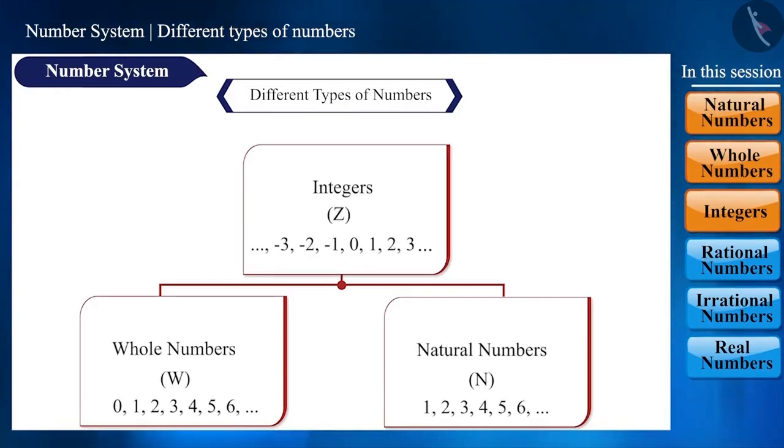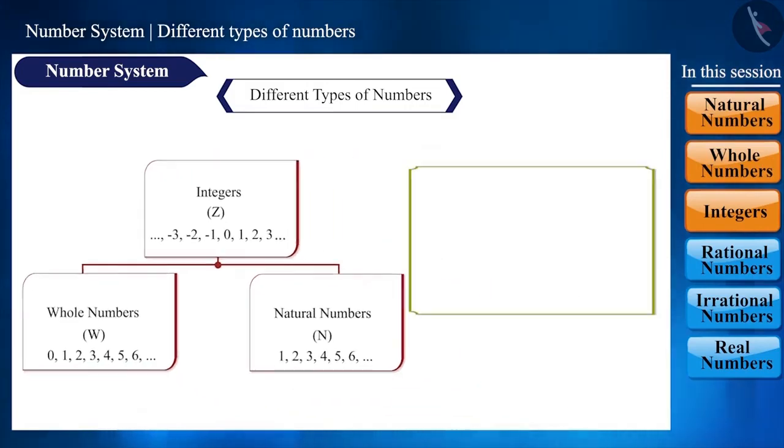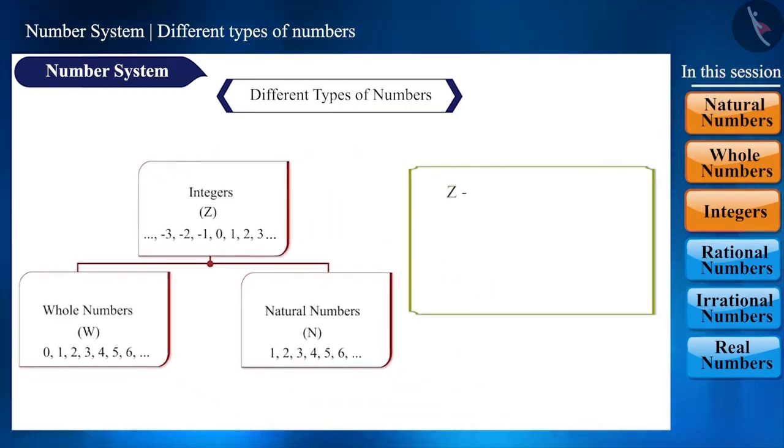Did it not occur to you as to why do we express integers with symbol Z and not with I? Z is derived from the German word Zalen, which means to count, and Zal, which means number.